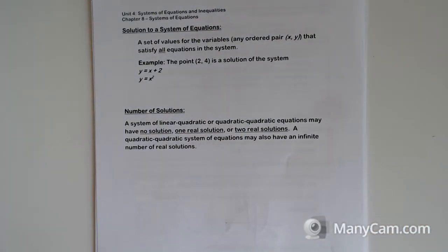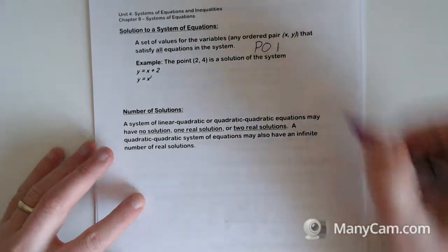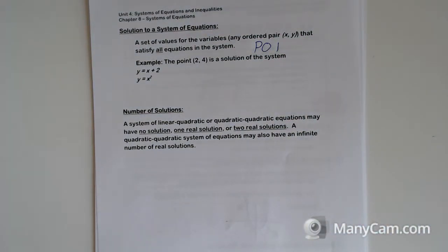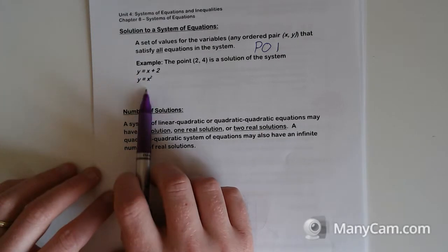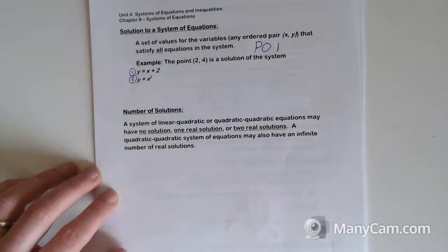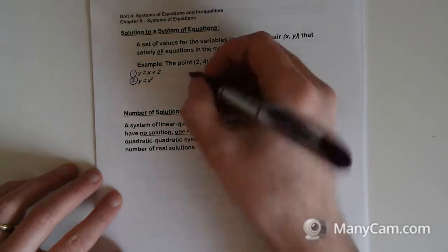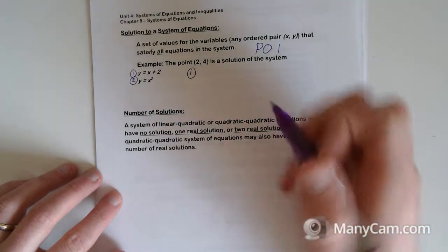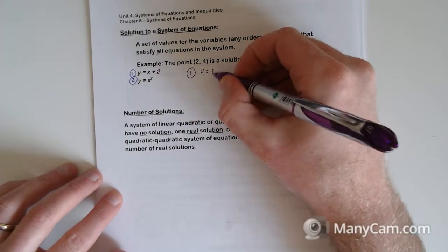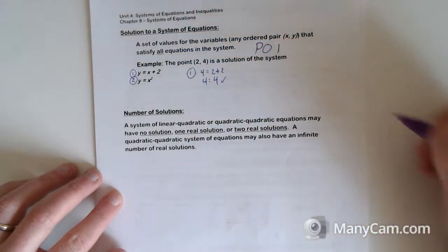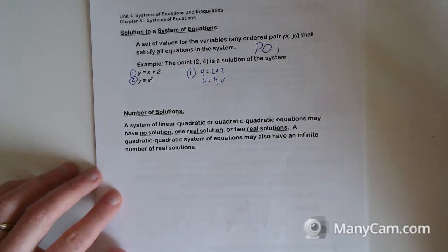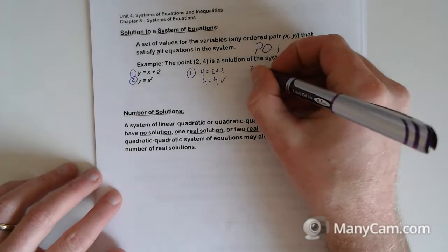A solution to a system of equations - what we're looking for is the values for the variables, any ordered pair which satisfies every equation in the system. We call these POIs, which is a point of intersection. So the point (2,4) is a solution to this system. Let's test number one at the point (2,4). So 4 equals 2 plus 2, so 4 equals 4. I've just proven that the line travels through the point (2,4).